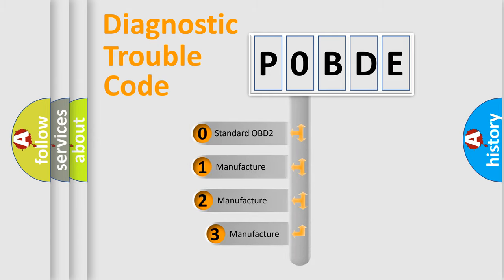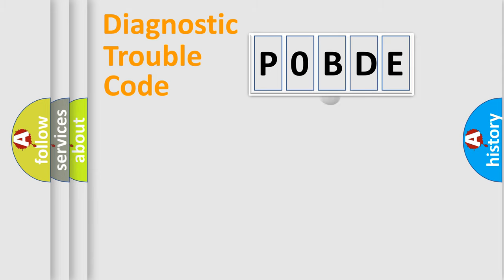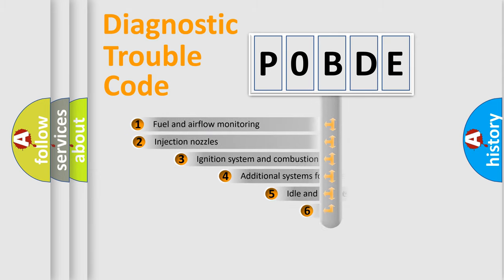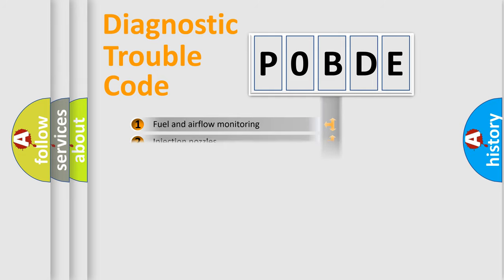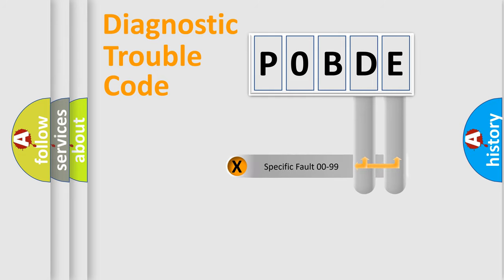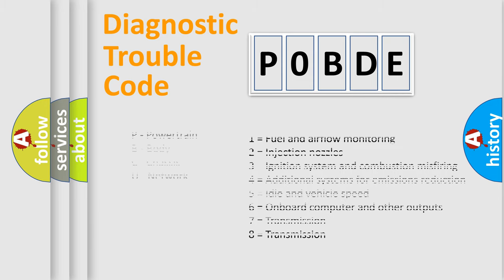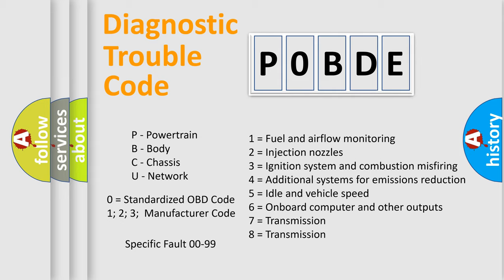If the second character is expressed as zero, it is a standardized error. In the case of numbers 1, 2, or 3, it is a manufacturer-specific error. The third character specifies a subset of errors. The distribution shown is valid only for standardized DTC codes. Only the last two characters define the specific fault of the group. Let's not forget that such a division is valid only if the second character code is expressed by the number zero.